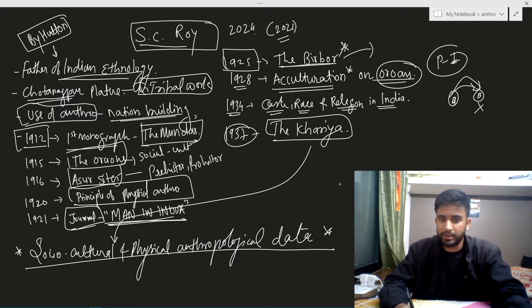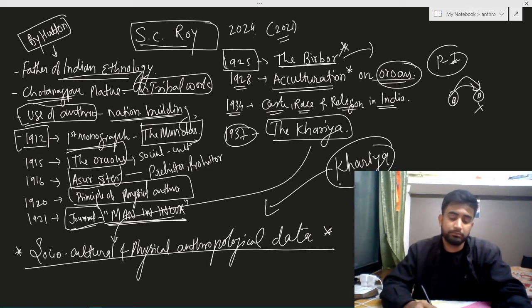He collected social, cultural, and physical anthropological data. Social cultural data is related to their life, daily activities, various institutions like marriage, family, kinship, the belief system, folk tales, etc.